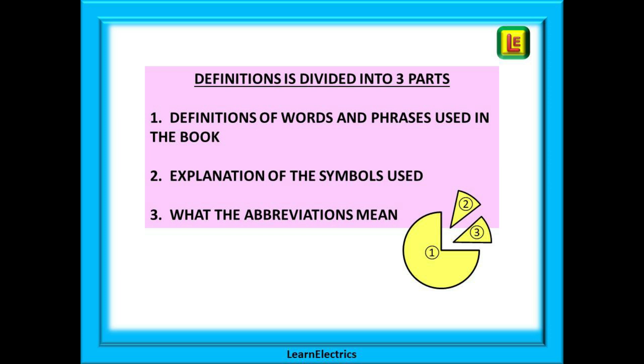The first and largest section is the definitions and phrases used in the book. The second section is where the meaning of the various symbols is explained and then finally the third section is the abbreviations that are used and what they mean, and we will look at these in turn.